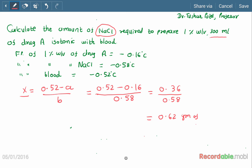Now we have to prepare 300 ml of the solution, and the answer that we got is the amount of sodium chloride per 100 ml. So we have to convert this for 300 ml.